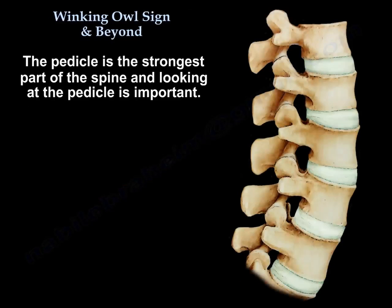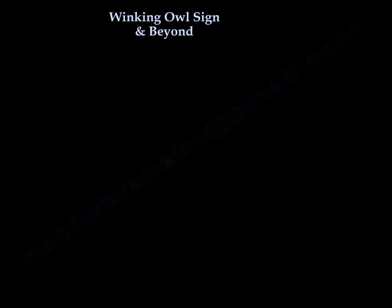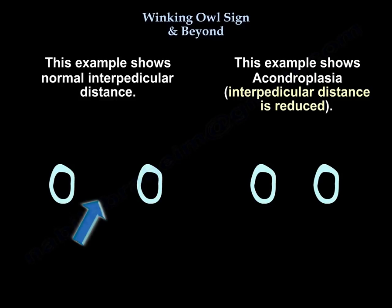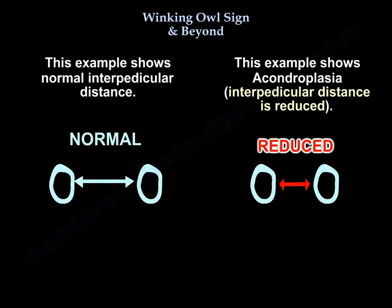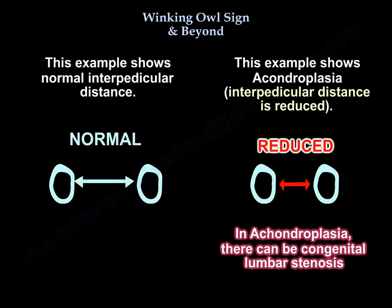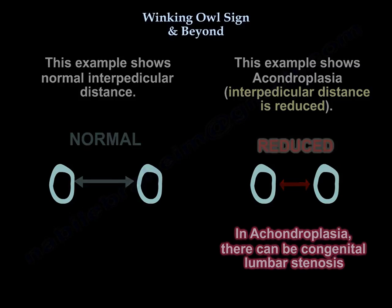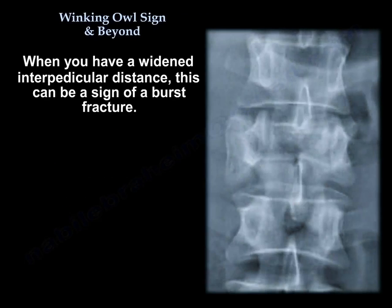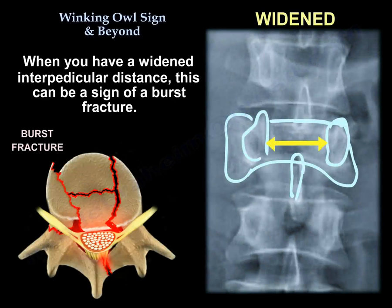The pedicle is the strongest part of the spine, and looking at the pedicle is important. For example, this is a normal interpedicular distance, and here in achondroplasia the interpedicular distance is reduced or narrowed, because in achondroplasia you can have congenital lumbar stenosis. When you have widened interpedicular distance, that can be a sign of burst fracture.